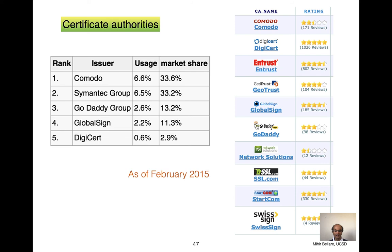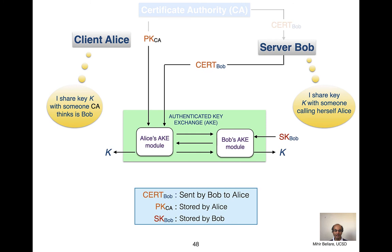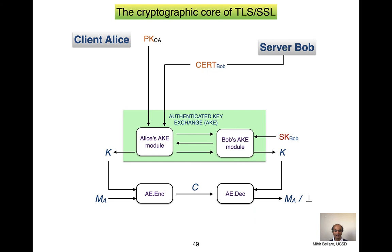Certificate authorities can be found out there — each has different services, ratings, prices, and market share. A very popular one is Let's Encrypt, which is easy to use and free. When we now think about TLS, our abstraction won't explicitly involve the certificate authority and the process of producing the certificate — those will vanish. But we will think about the public key of the certificate authority and the actual certificate as inputs. That is what we call the cryptographic core of TLS and SSL — a mathematical abstraction representing where almost all the cryptography happens.